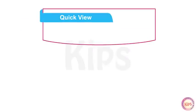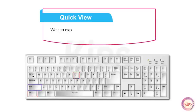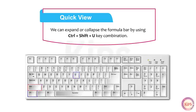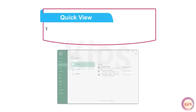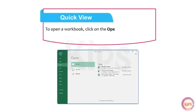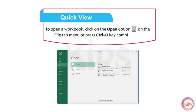Here are a few interesting shortcuts. We can expand or collapse the formula bar by using Ctrl+Shift+U. To open a workbook, click on the Open option on the File tab menu or press Ctrl+O.